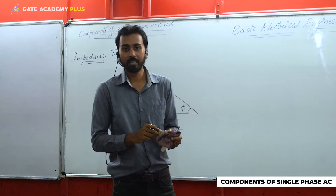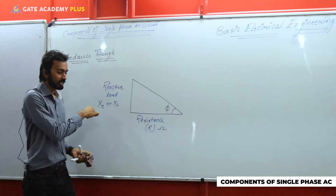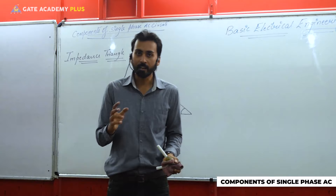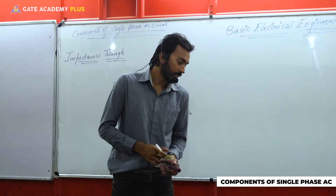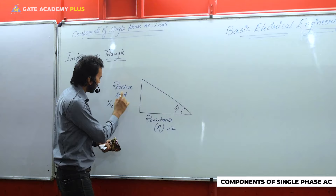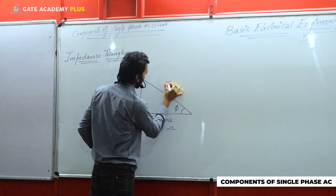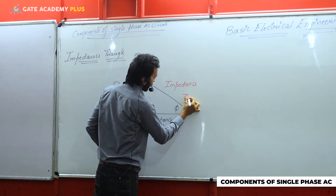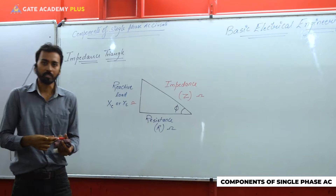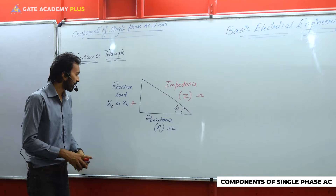If we are having both quantities — Xc as well as Xl — then we have a comparison: whether Xc is greater than Xl, or the reverse where Xl is greater than Xc, or the third condition where Xc equals Xl. That third condition is the particular condition of resonance available in any circuit. The resultant of the resistive part and reactive part is given as impedance, denoted by Z, unit ohms. This right angle triangle is known as the impedance triangle.